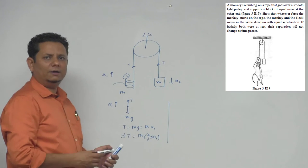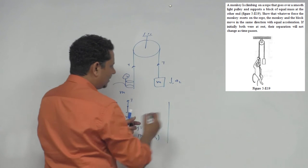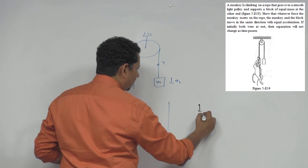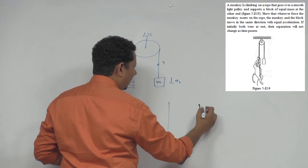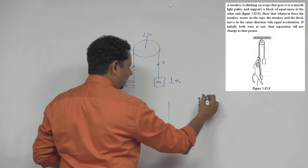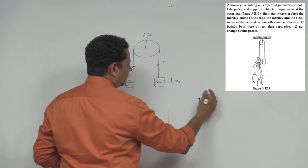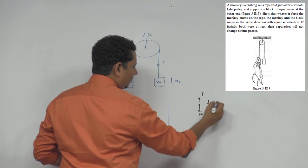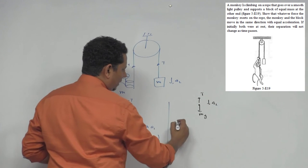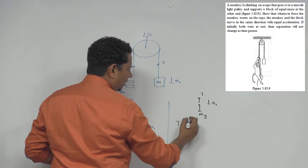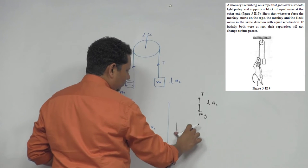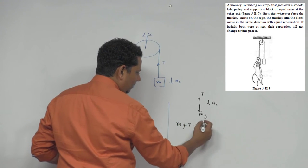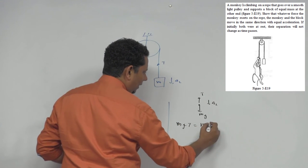Similarly, drawing the FBD of the block: downward force is mg, upward force is tension T, and the block's acceleration is A2 downward. Since the block is going downward, the equation becomes: Mg - T = M·A2.